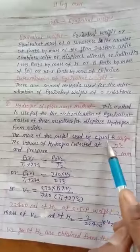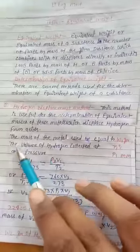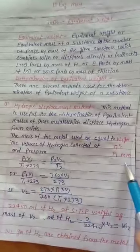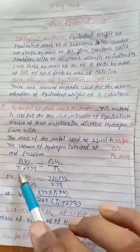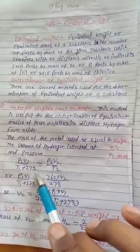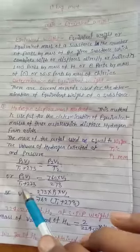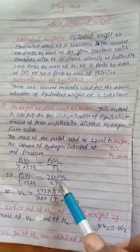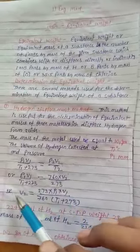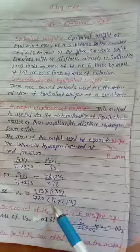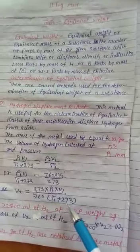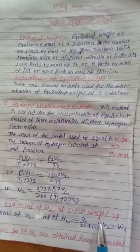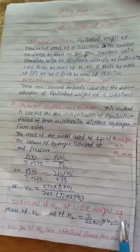The mass of the metal used be equal to W1 gram. The volume of hydrogen collected at T1 degree Celsius and pressure P1 mm: P1V1 by T1 plus 273 equal to P2V2 by T2, or V2 equal to 273 into P1V1 upon 760 T1 plus 273.